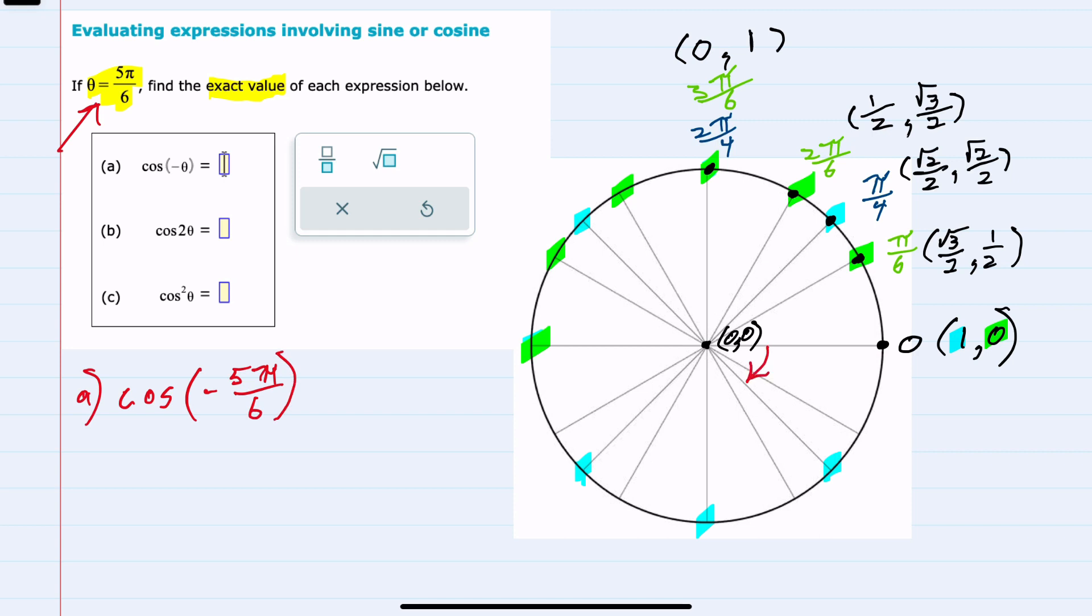It's written as 6, so I know that I will be focusing on these multiples of negative π/6.